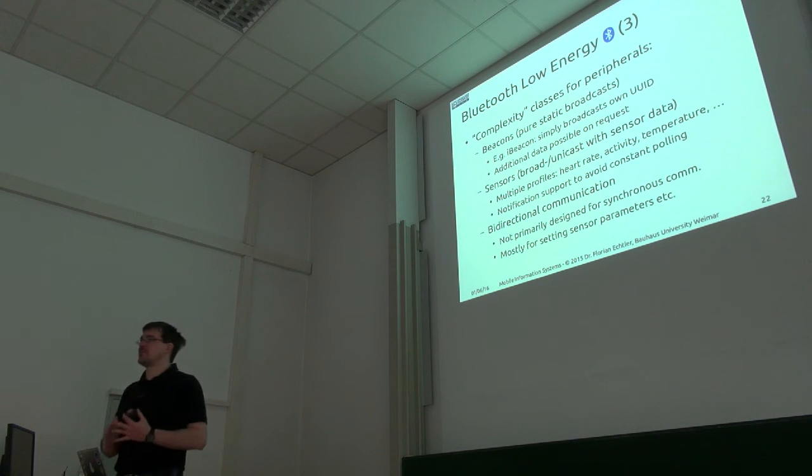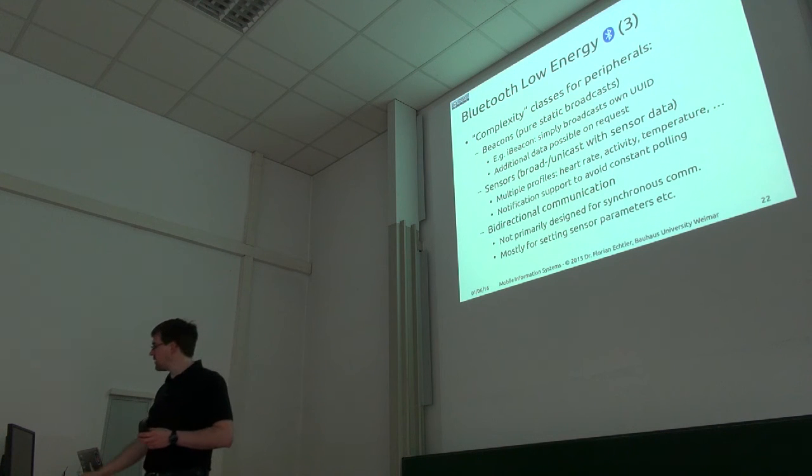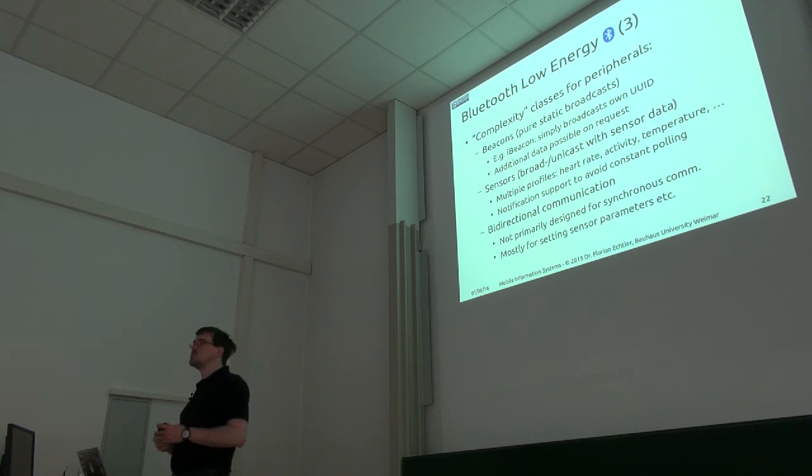We have roughly three different types of complexity of devices. So we have the simplest devices we can have are so-called beacons. They just send out static broadcasts at a fixed interval. You may have heard of iBeacons, which is the Apple implementation of this. These are simply devices which have a 128-bit ID, and they broadcast this every five seconds maybe. And if you have then a compatible smartphone with a suitable app, then you can look up, for example, the positions of that beacon in a database, and it can tell you roughly where you are, for example, in a big store. So that's the main usage scenario here.